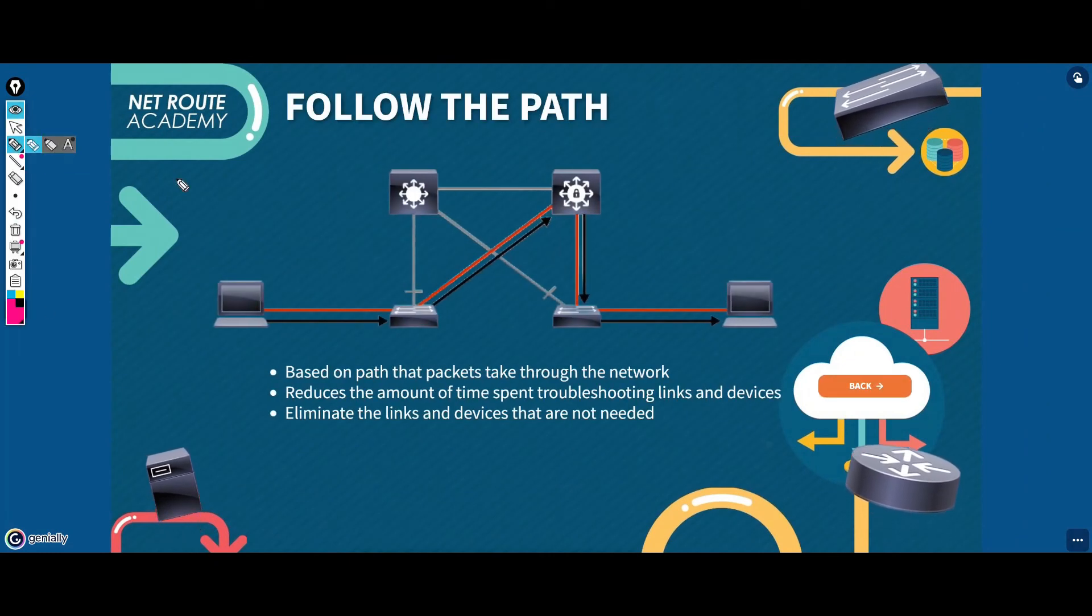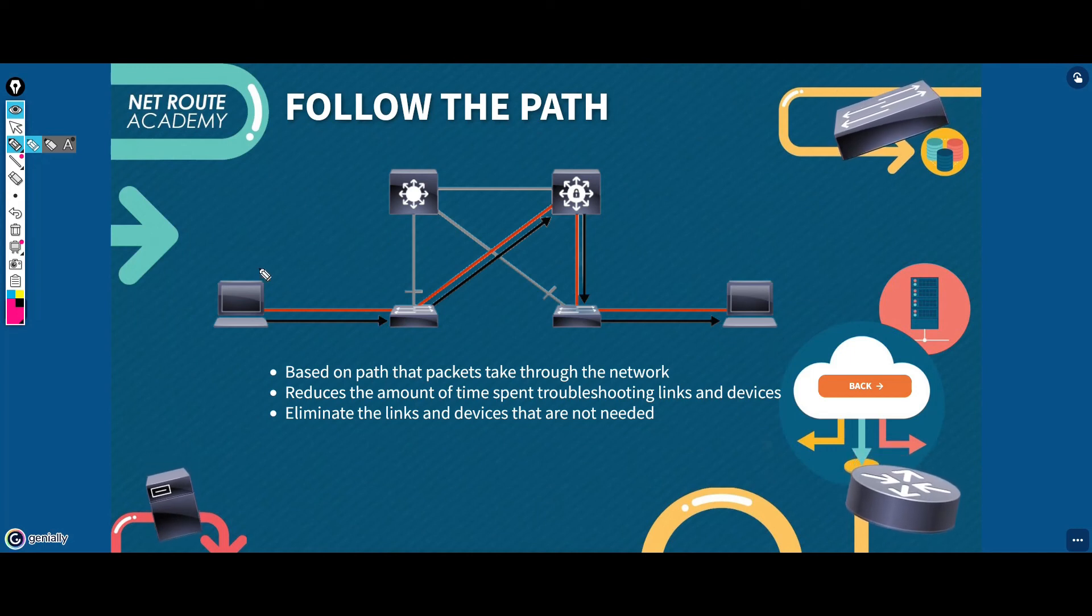The last troubleshooting method would be the follow the path approach. Basically, you will just follow the path that the traffic should be taking through the network to get to the destination. This way you could eliminate alternate paths and focus on the primary one while troubleshooting links that are irrelevant to the problem.